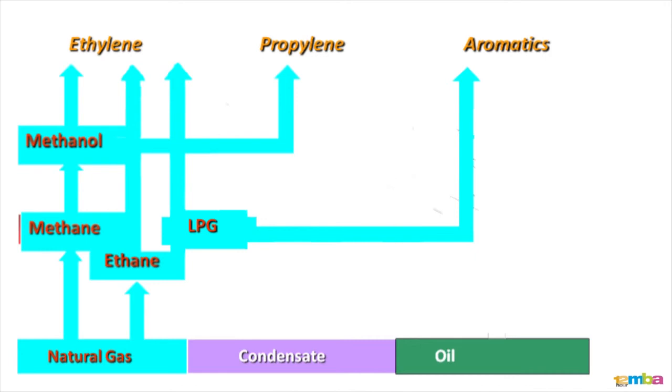On the top side, you see ethylene, polypropylene, and aromatics, the basic components of petrochemical industry. How these are derived from the natural gas, condensate, and oil through this illustration.